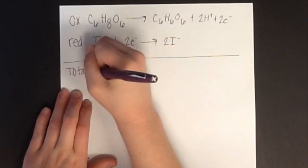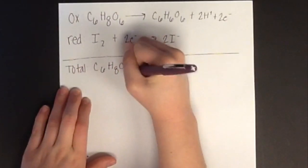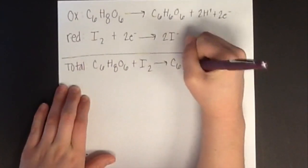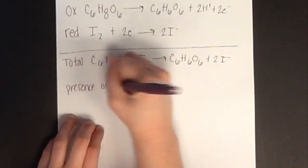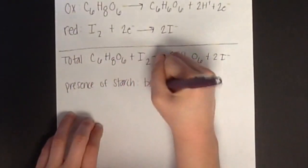iodine will be reduced, meaning that iodine will gain two electrons, as shown in the equation. The total of these two will tell you the overall reaction of vitamin C and iodine.